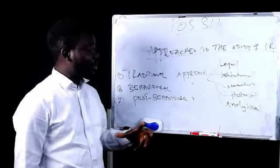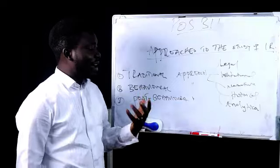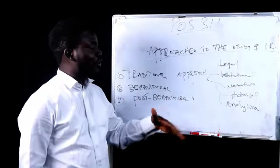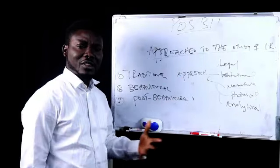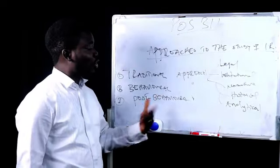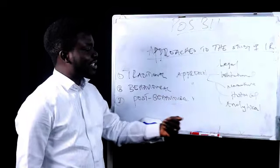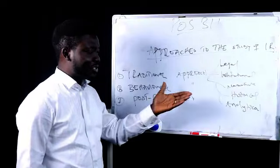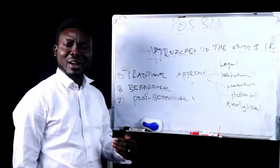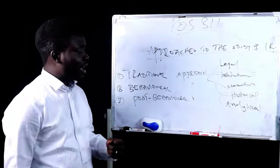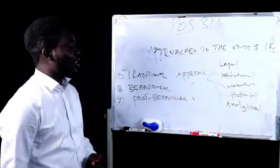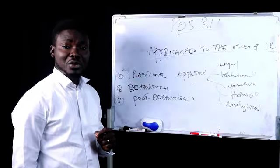The normative approach derives its analysis by identifying existing norms within the international system. There are certain understandings you must have of the norms and values of a particular state before you can do a critical analysis of its relationship with other states. For instance, recently we have been having the crisis in Myanmar — what is popularly called the Rohingya Muslim crisis. How would one do this analysis without having an idea of the norms and values of the various ethnic groups within Myanmar? This also relates to the clash of civilizations as propounded by Samuel Huntington.